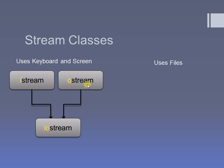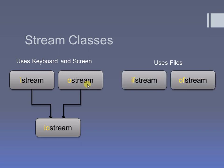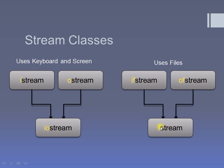In the same manner, if I want to perform the same operations on files, I have to use ifstream for input operations and ofstream for output operations. Together, ifstream and ofstream use the header file fstream. These are the streams we are going to use when we want to perform input and output operations on files.